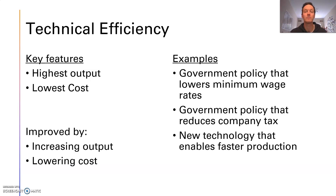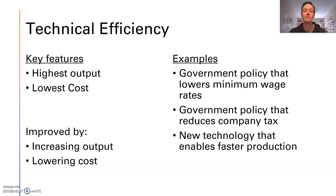This relates to concepts of the production possibility frontier that we've learned before. If an economy is operating on the production possibility frontier it would mean that we have maximized our technical efficiency — there's no wastage. When there's no wastage, that means there's the highest output and lowest cost. So when we think about ways in which technical efficiency can be pursued, anything that either increases output — the amount of stuff that we can make — or lowers the cost of production is going to increase technical efficiency.